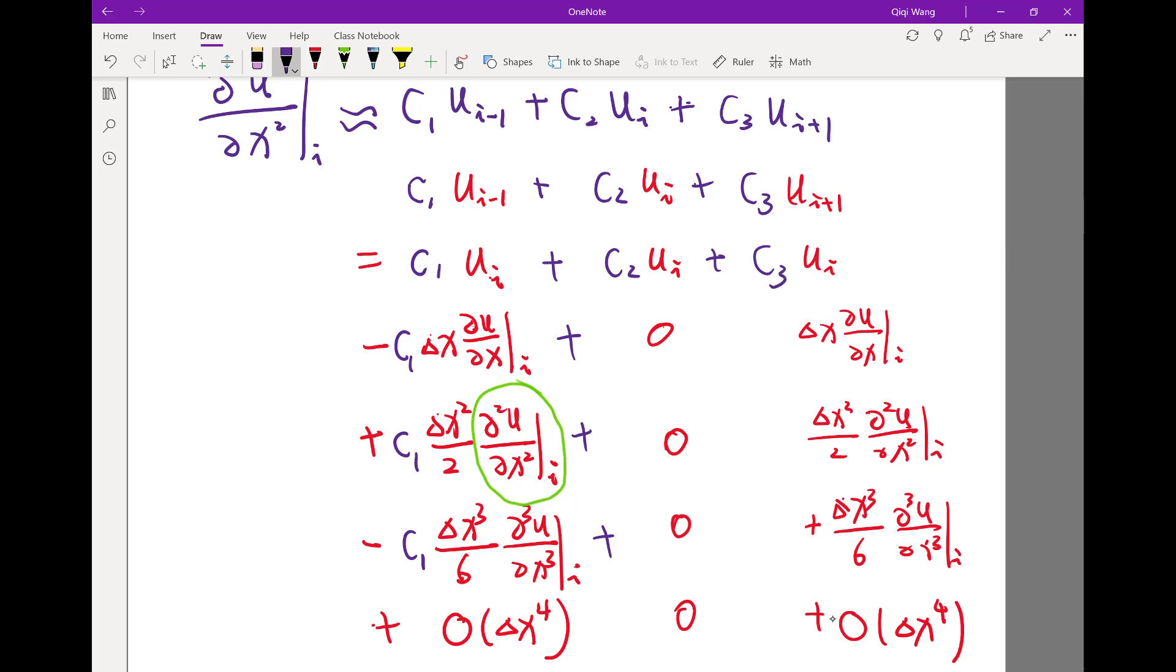If I have a coefficient, I'm going to have C3 multiplied on everything.